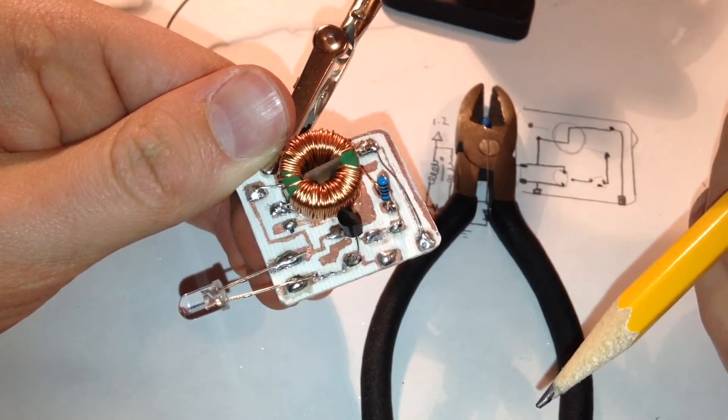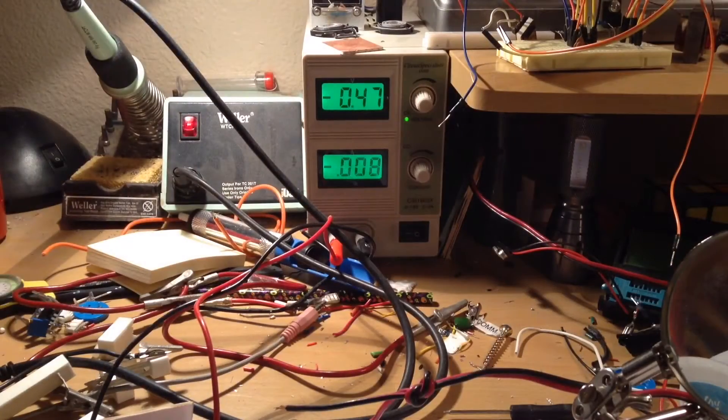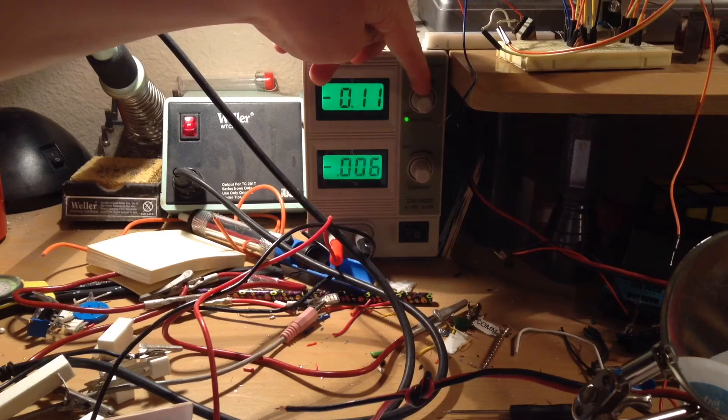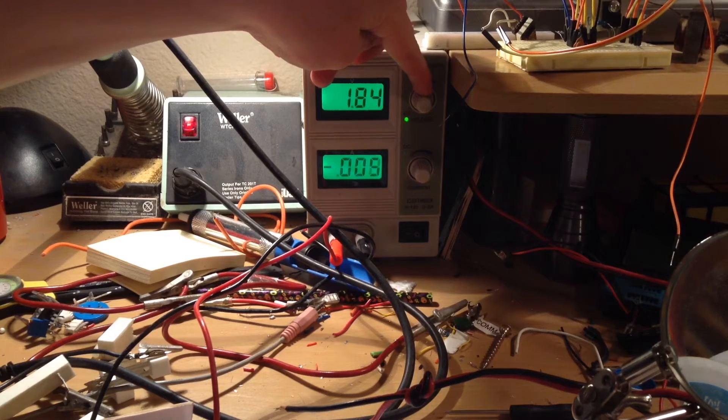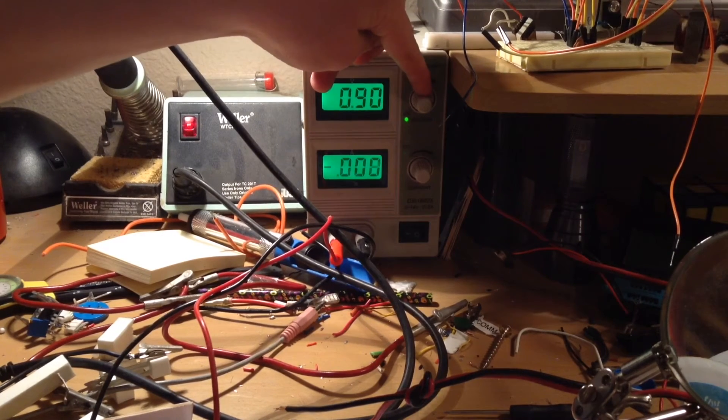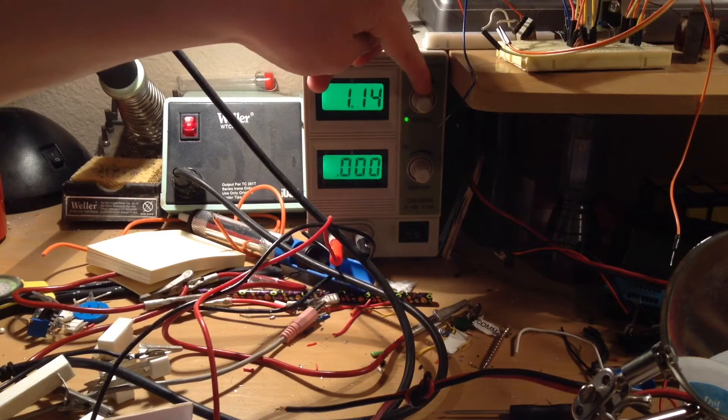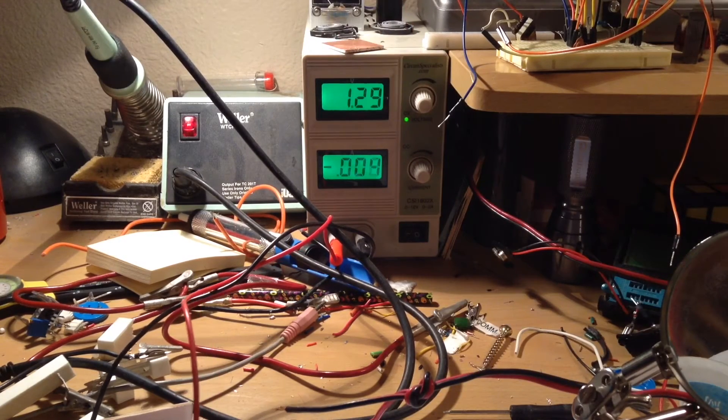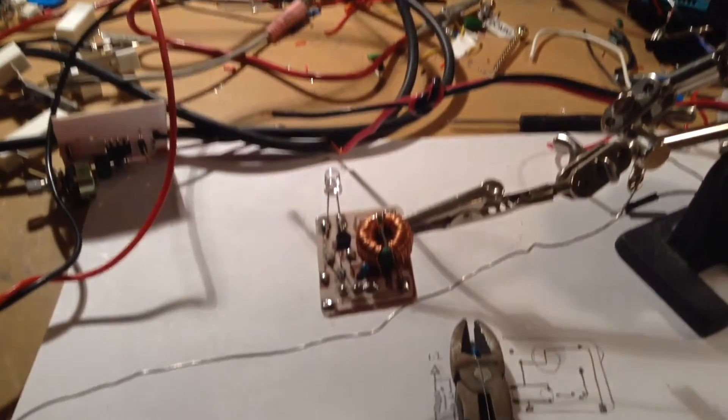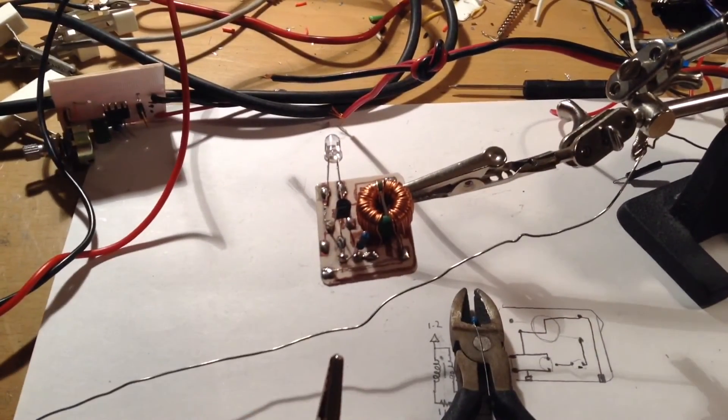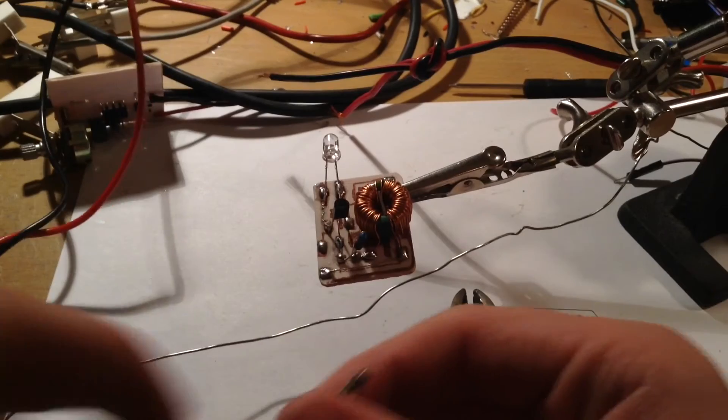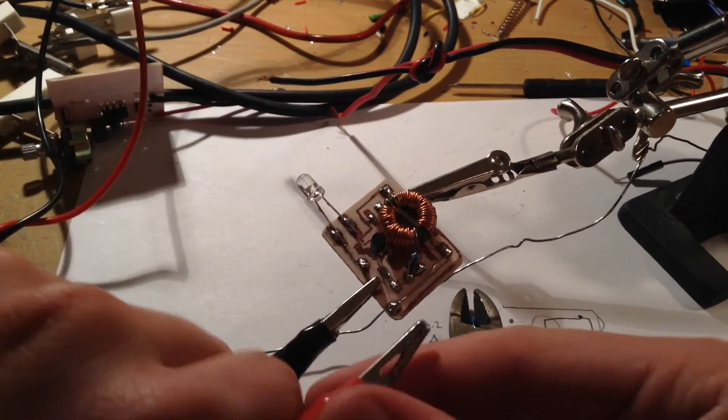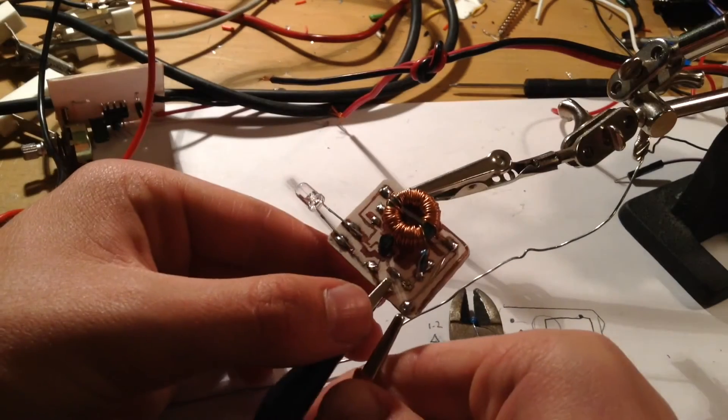So now to test it out. I'm going to set my bench power supply to about 1.2 volts, which is about the voltage of a dead double A battery. Maybe 1.27. I'm going to come down here and connect it to my joule thief circuit. I'm going to connect the negative lead to this pad right here, which was negative, and the positive lead to this pad.